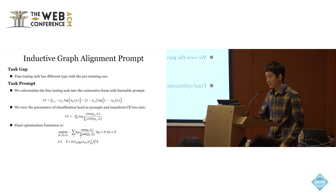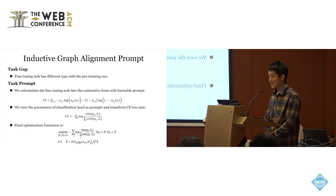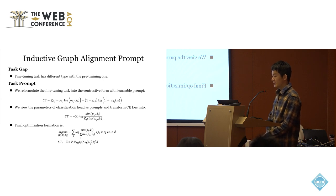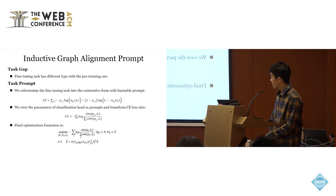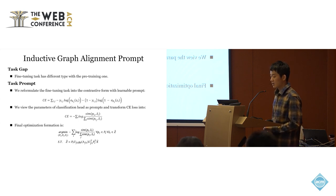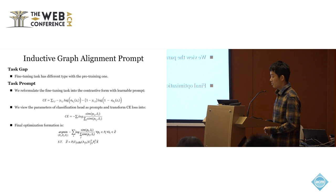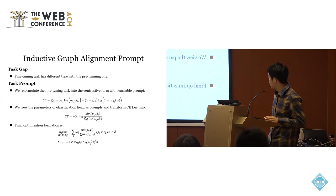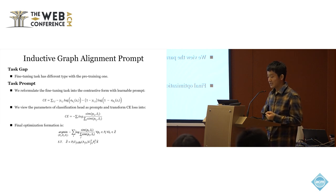And at last, we propose a task prompt to alleviate the gap caused by the task gap. We reformulate the fine-tuning task into the contrastive form with a learnable prompt. Specifically, for the classification task, if we view the parameters of the classification head as a prompt, then the cross-entropy loss can be reformulated as a contrastive form. And finally, we can get the final optimization target.